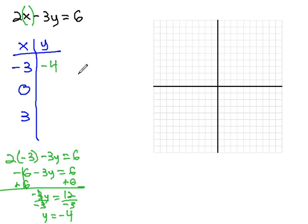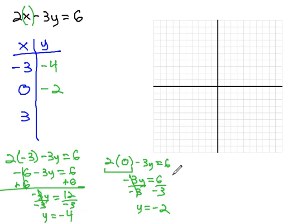The second value we want to plug in for x in this equation is the 0. So we have 2 times x, or 2 times 0 minus 3y equals 6. Well, 2 times 0 is 0, so we're really left with negative 3y equals 6. Divide by negative 3, we get y equals negative 2. So we'll plug negative 2 in for our y value. When x is 0, y is negative 2.